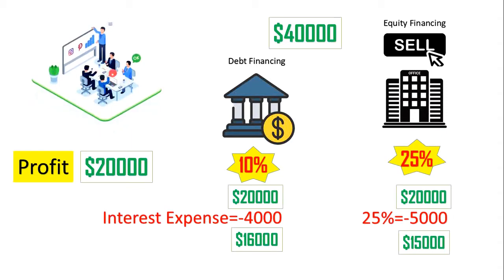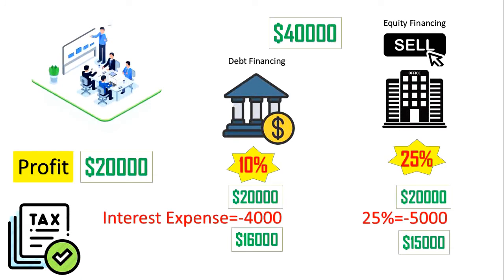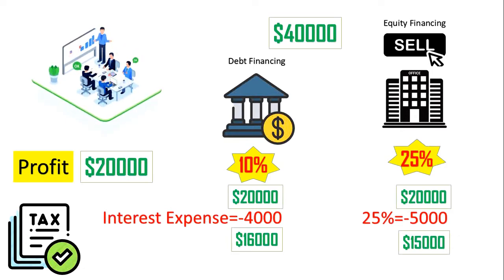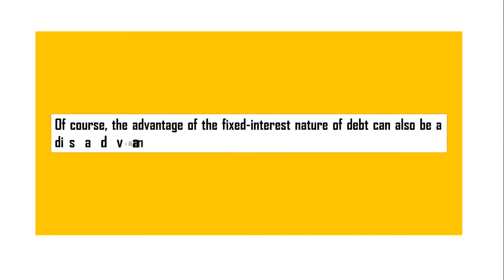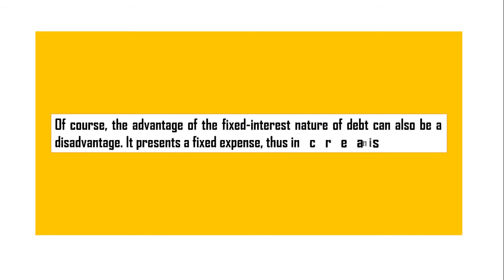From this example, you can see how it is less expensive for you as the original shareholder to issue debt as opposed to equity. Taxes make the situation even better, since interest expenses are deducted from earnings before income taxes are levied, thus acting as a tax shield. We have ignored taxes in this example for simplicity.